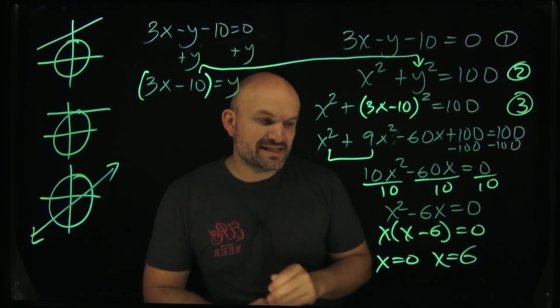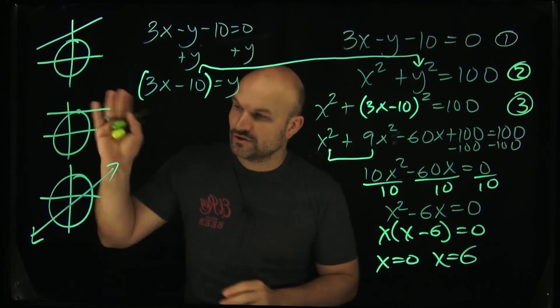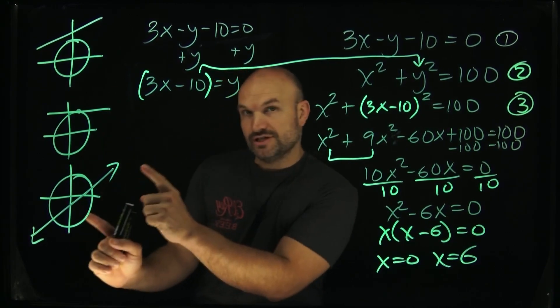Now what we've identified is the value of x's where the graphs are going to intersect. You can see that we actually have two solutions here. But now we need to be able to solve for y.